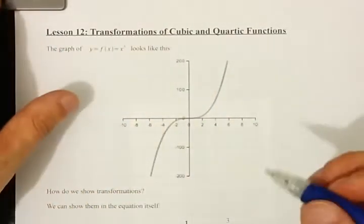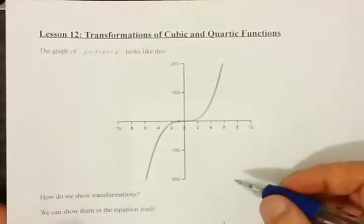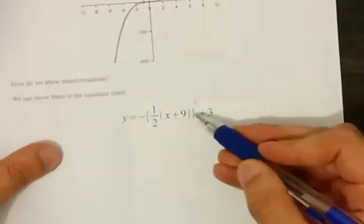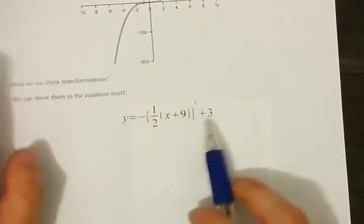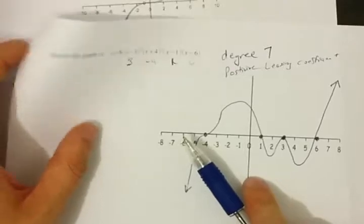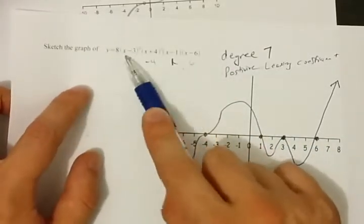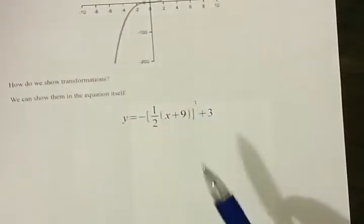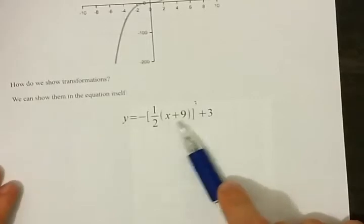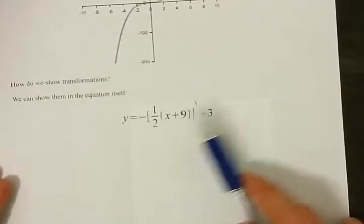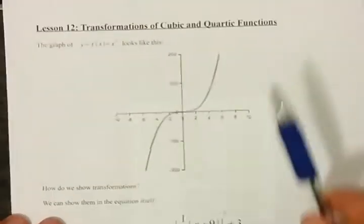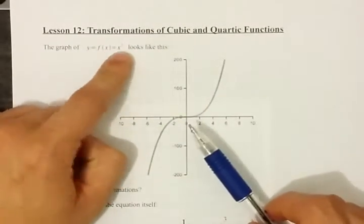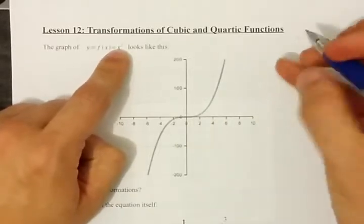Here, your functions are simply going to have one term in it, like x to the power of 3, but you're going to have numbers inside and outside brackets, just like you've had with transformations. You're only ever going to have one x-intercept here, whereas in curve-sketching you had multiple x-intercepts. We're going to be transforming x to the 3 and x to the 4.